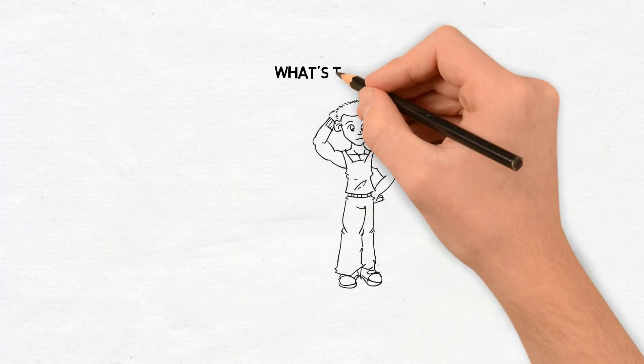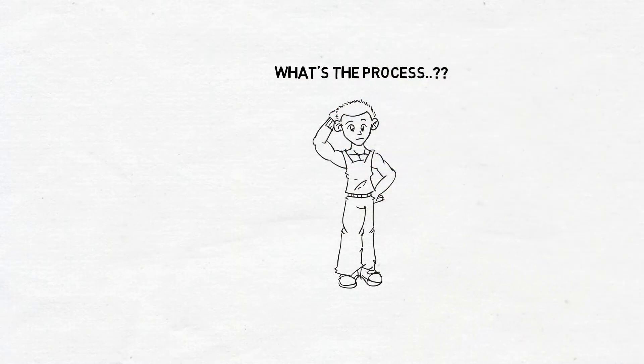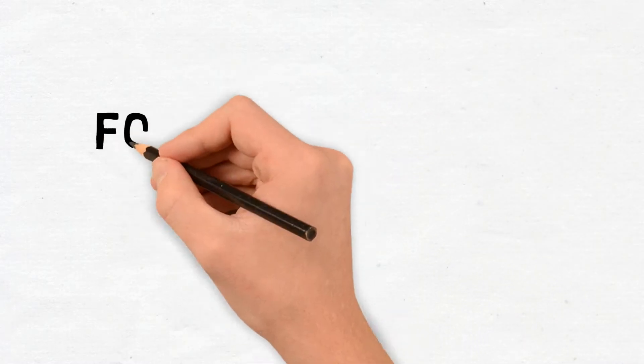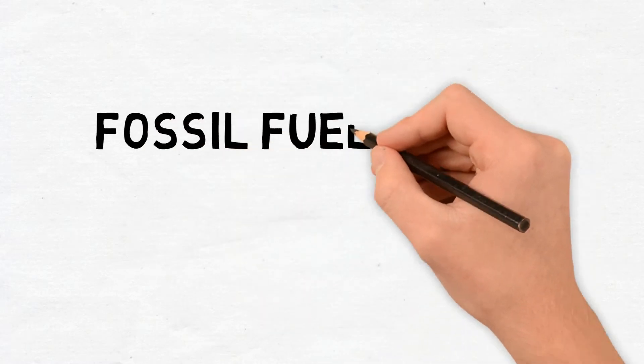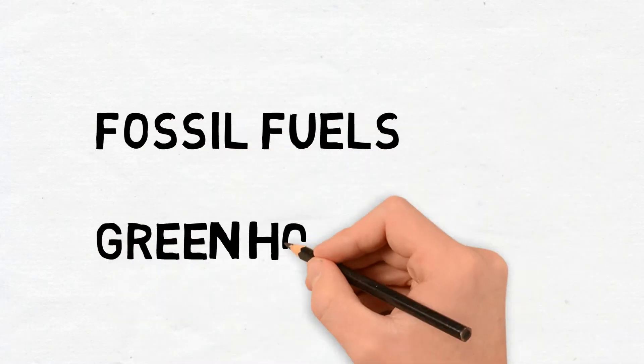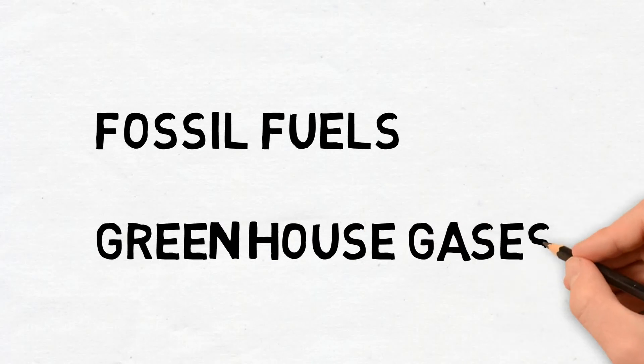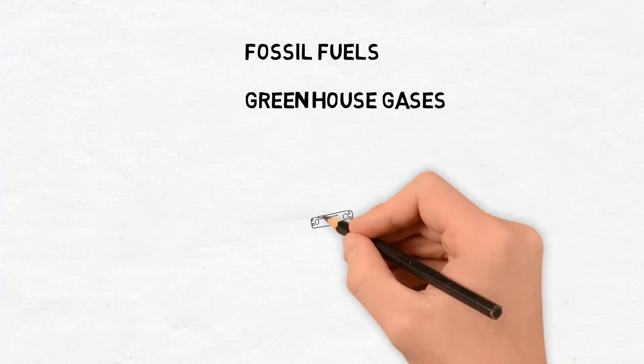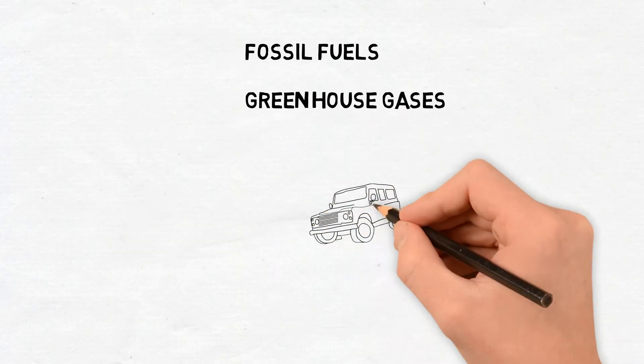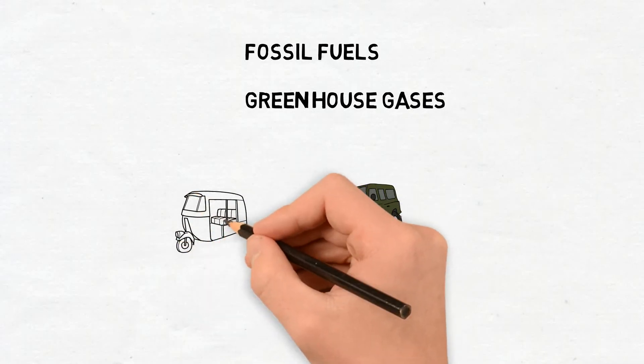So, in this video, we're going to see how the whole process of global warming takes place. First of all, we need to know about two terms: fossil fuels and greenhouse gases. Now, fossil fuels are nothing but energy sources used in vehicles and industries. We all know that. Examples of them are coal and petroleum.